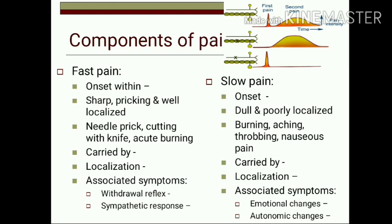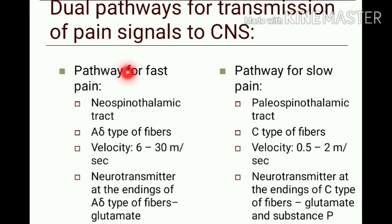Associated symptoms of slow pain include emotional changes, unpleasant sensation, irritation, frustration, depression, and autonomic changes such as nausea, profuse sweating, vomiting, decrease in heart rate and blood pressure. The pathway for fast pain is the neospinothalamic tract, and for slow pain the paleospinothalamic tract. Velocity of transmission for fast pain is 6 to 30 meters per second and for slow pain 0.5 to 2 meters per second. The neurotransmitter at the A-delta fiber ending is glutamate, while at the C fiber ending it is mainly substance P as well as glutamate. Glutamate acts as an instant neurotransmitter lasting only milliseconds, whereas substance P is released slowly and lasts longer.